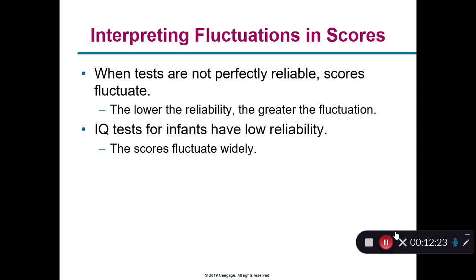When interpreting fluctuations in scores: when tests are not perfectly reliable, scores fluctuate. Somebody should be able to take it at the same time and get the same score each time. If they tend to miss it and things get scattered everywhere, you're not going to get a general idea of someone's intelligence — you'll get very mixed results. You need something that's consistent over time.